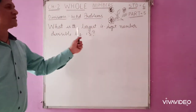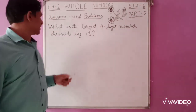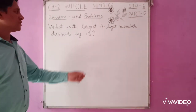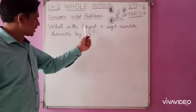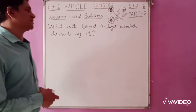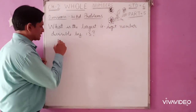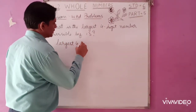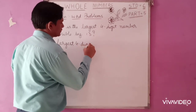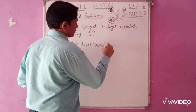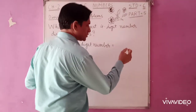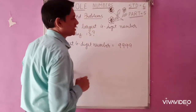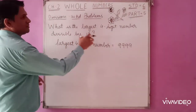Here is a problem: what is the largest 4-digit number which is divisible by 13? So we are talking about the largest 4-digit number. The largest 4-digit number is 9999.